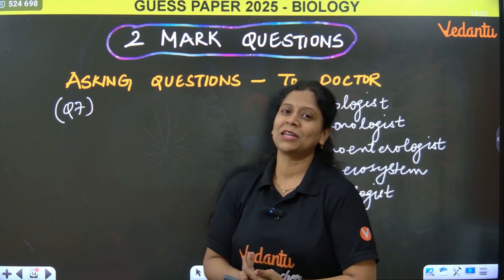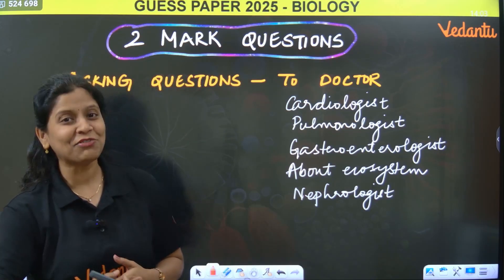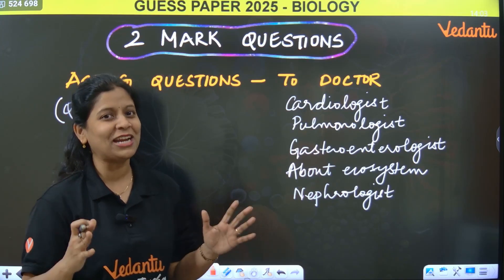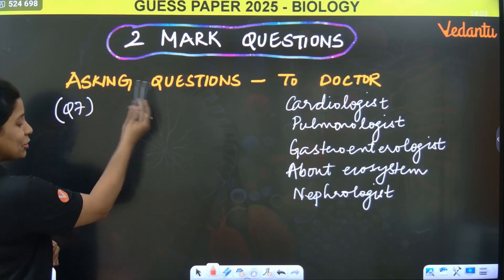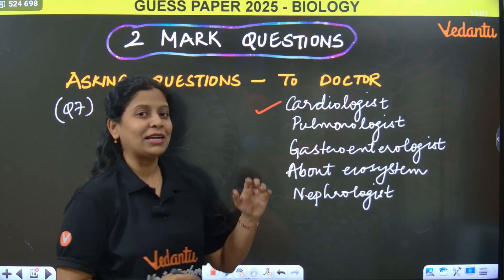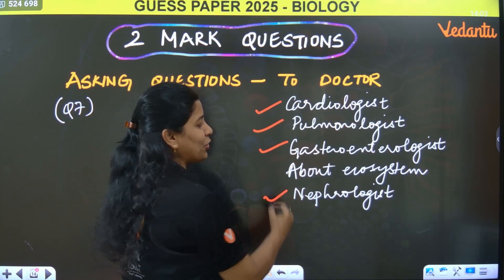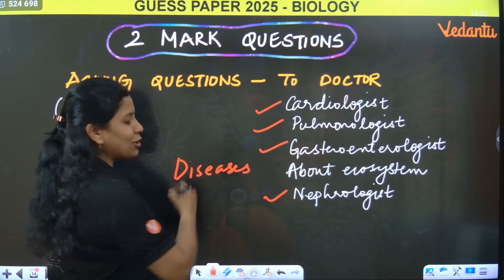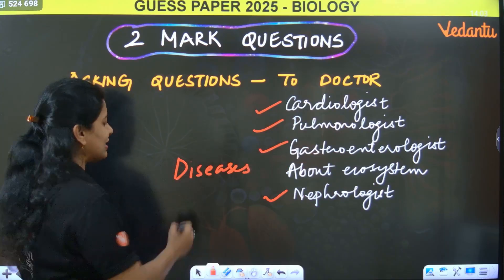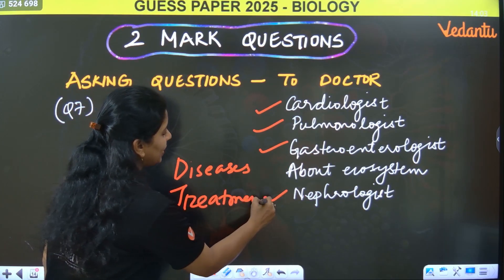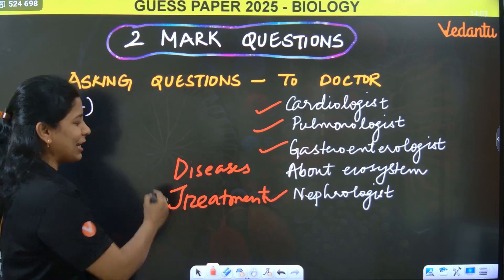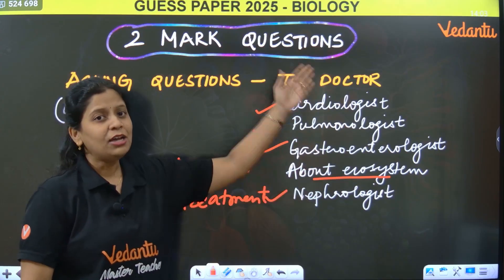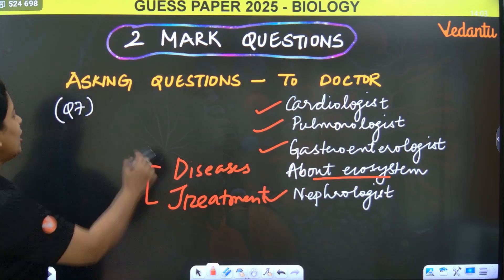Now, for 2-mark and 1-mark questions you all need to join the evening session marathon. In the evening session, all important predicted questions — 1 mark, 2 mark, 4 mark, 8 mark — everything will be explained with answers. One important question type: asking questions to a doctor — for example, a cardiologist, pulmonologist, gastroenterologist, or nephrologist. When visiting these doctors, you make questions based on disease or a particular organ-related disease, or ask about the treatment of that particular disease.